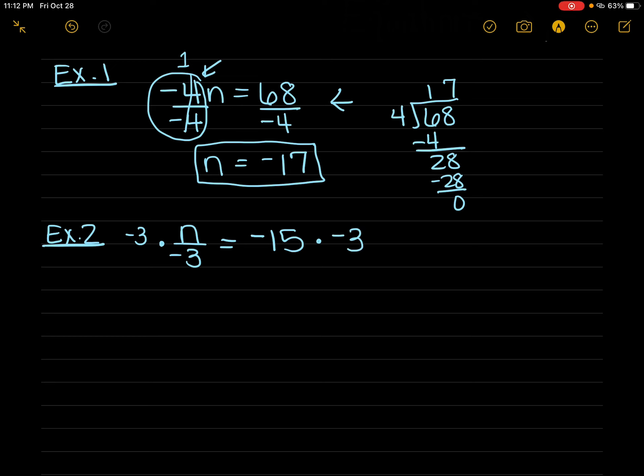Always do it on both sides of the equation, because that keeps your equation balanced. So these two cancel each other out, and I get n equals. Now I'm going to do 15 times 3. If you need to go off to the side and do it, you can do that.